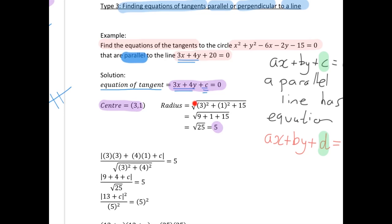Our radius is square root of g squared plus f squared minus c. Our c is minus 15, so minus by minus gives us plus 15 this time. So we take the square root of 3 squared is 9, 1 squared is 1, 15 stays as it is, so we get the square root of 25, and we have a radius of 5.